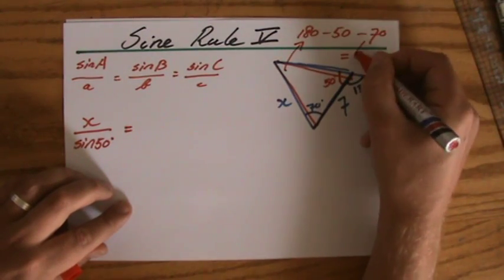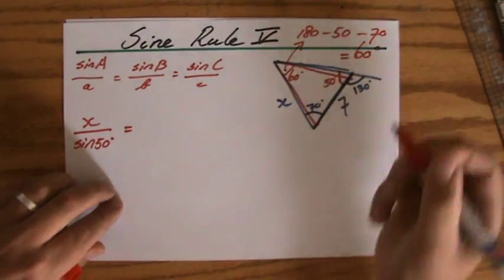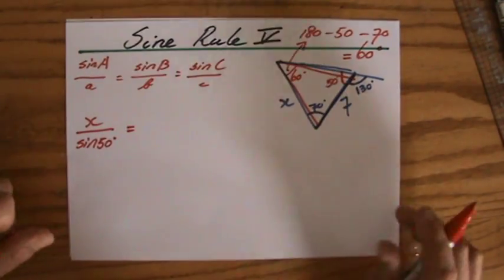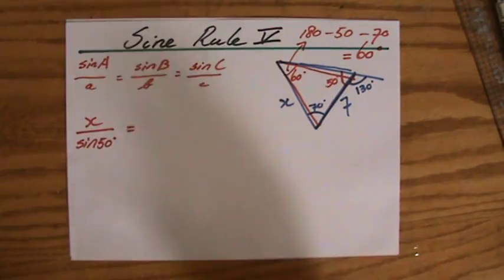is going to equal 60 degrees. So actually, they do give you that angle, it's just a little bit in disguise. Okay, you've got to find it. You've got to do some work for it. Well, there's nothing wrong with that.